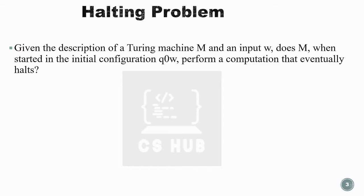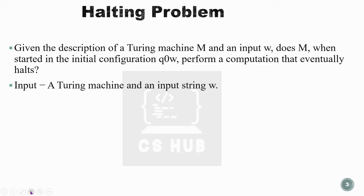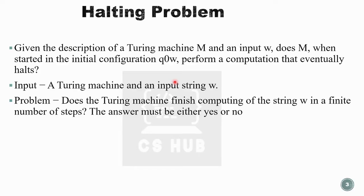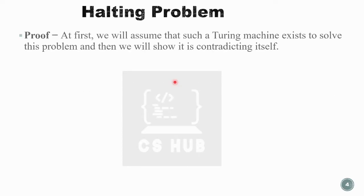The formal problem is: given the description of a Turing machine M and an input W, does M, when started in the initial configuration q0W, perform a computation that eventually halts? When a Turing machine starts in its initial state and reads input configuration q0W, it performs a sequence of computations and eventually halts, either accepting or rejecting. The question is: does the Turing machine finish computing on string W in a finite number of steps? The answer must be either yes or no, making this an undecidable problem.